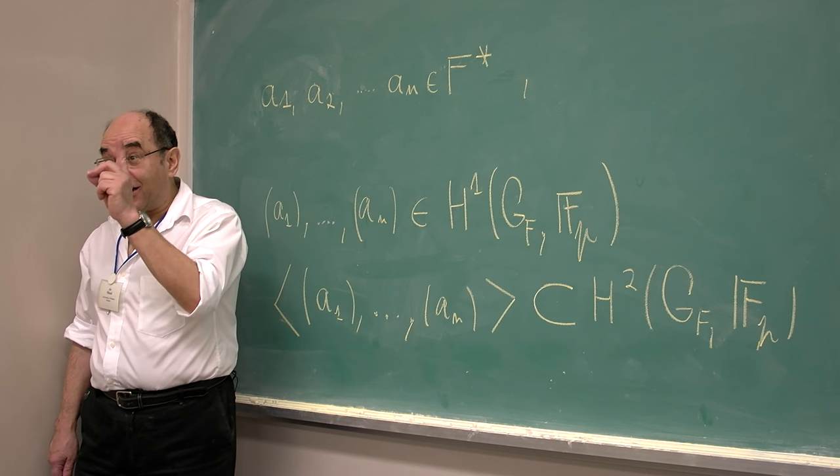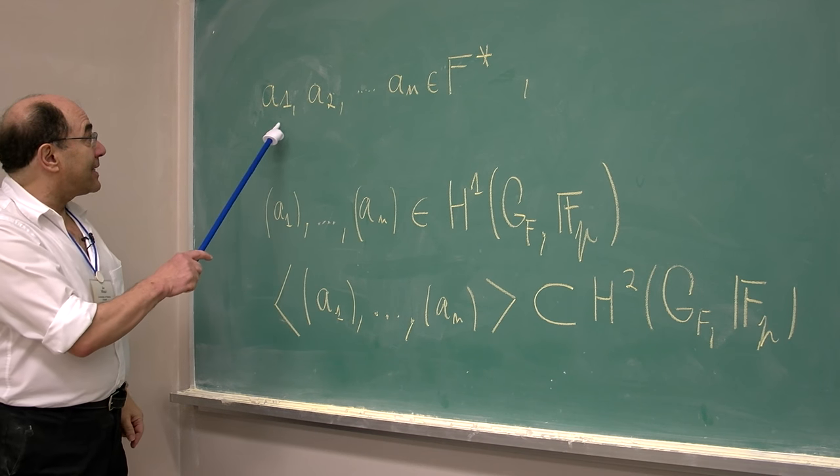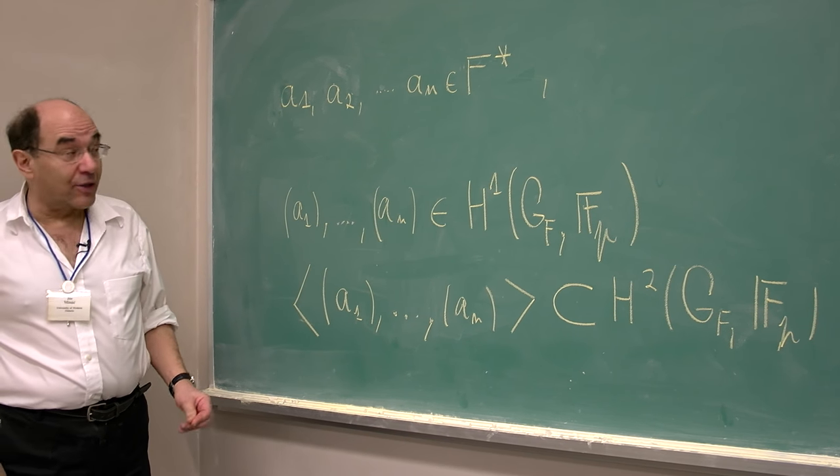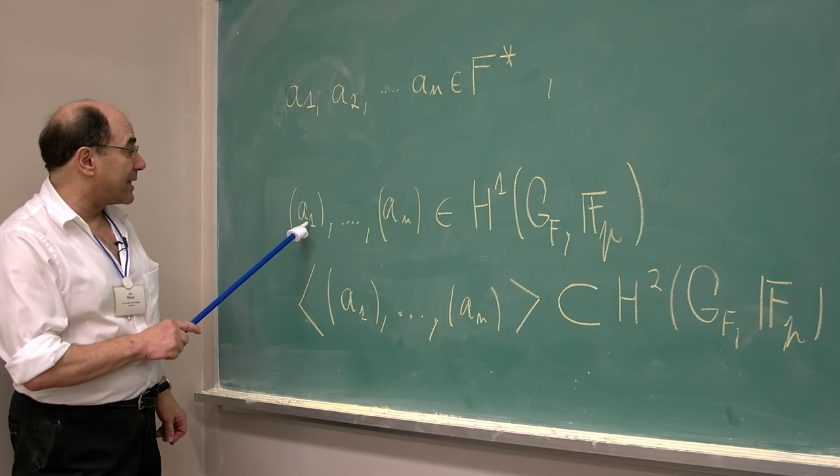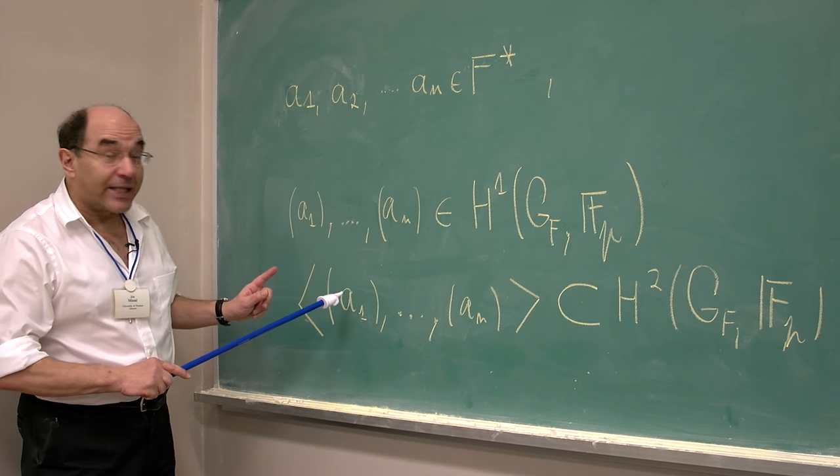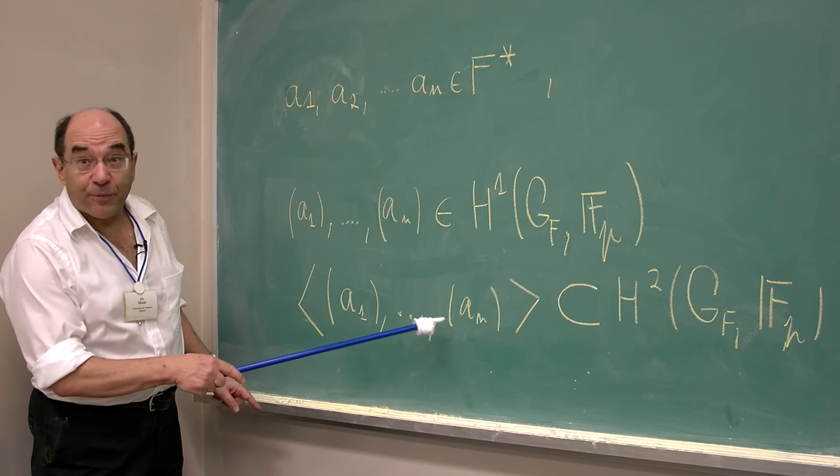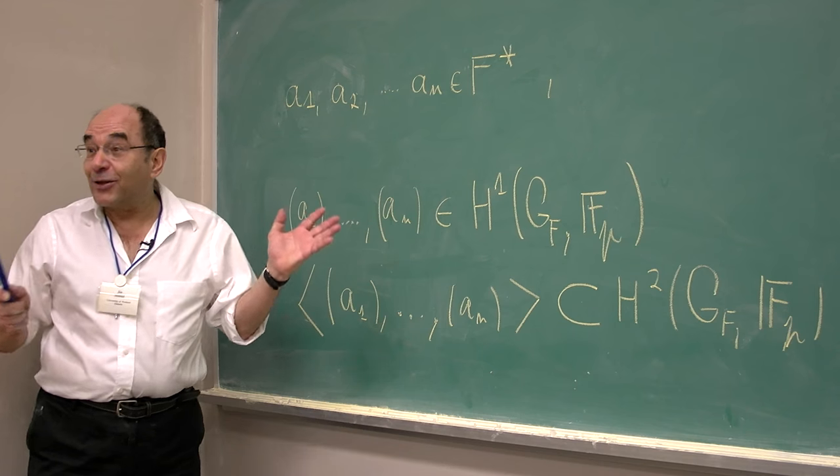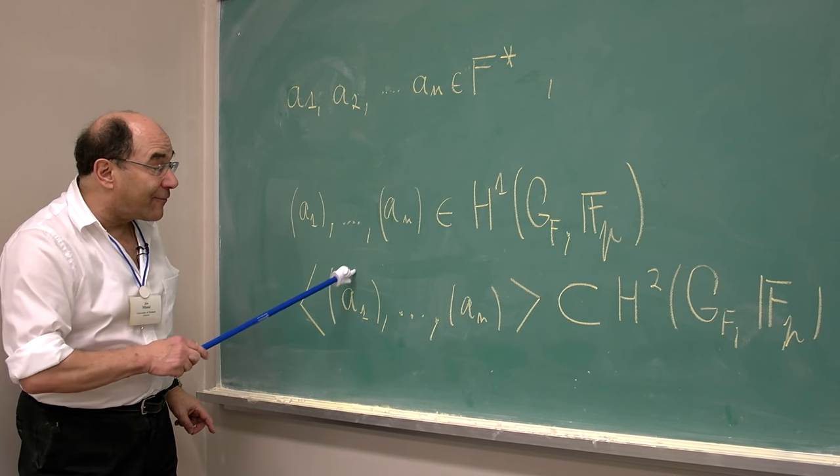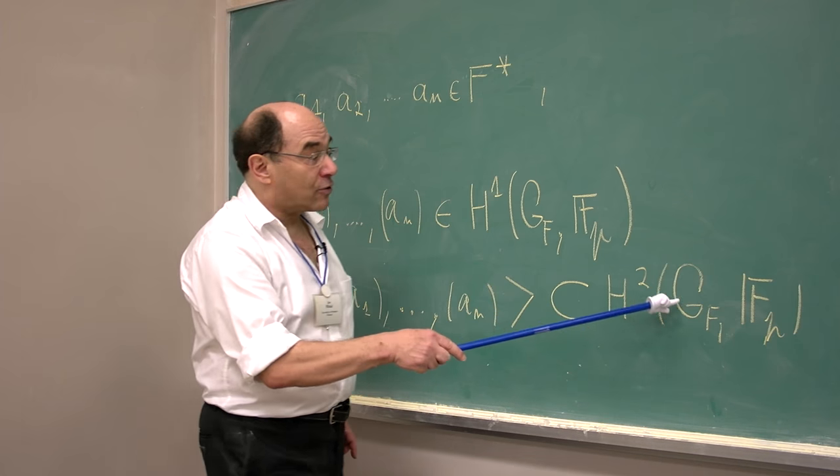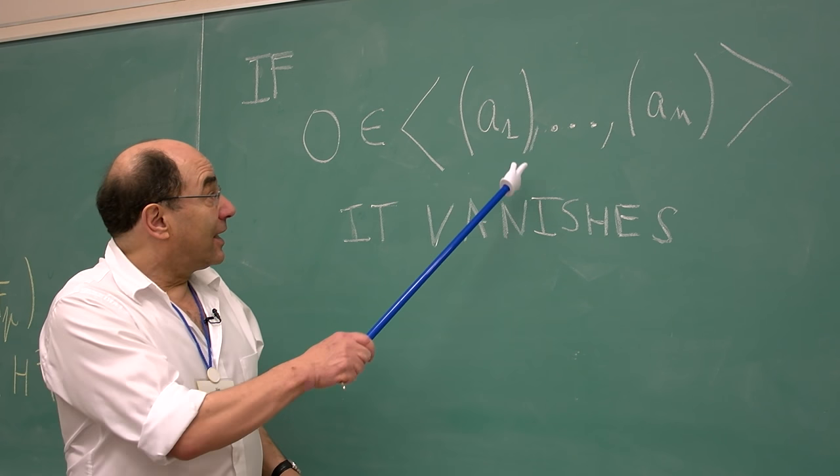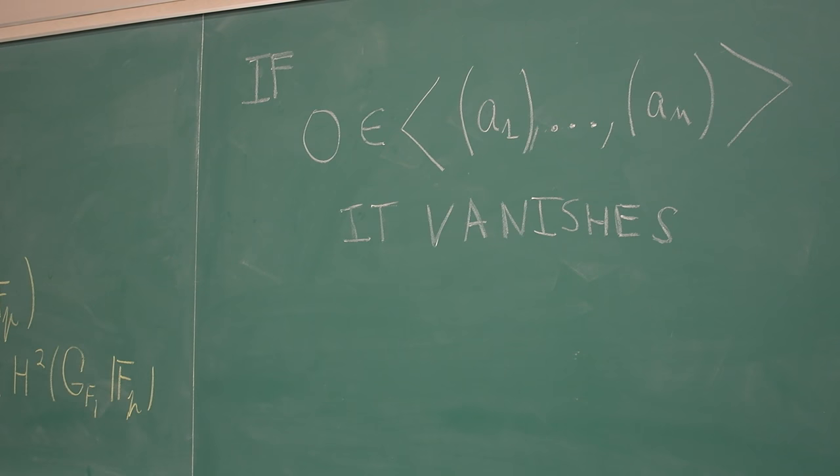Thank you, Yasmin. This is, again, a great question. Consider element a sub 1, a sub 2 up to a sub n from multiplicative group of F. And then, by Kummer theory, you can associate by Kummer map these elements a sub 1 up to a sub n from first cohomology group. And then, what happens is that this n-Massey product, a 1 up to a n, is either defined or is not defined. Suppose it is defined. If it is defined, it is not just a single valued function, but it is a subset of H2, second cohomology group of GF with FP coefficients. In the case when n-Massey vanishing is defined, and it contains zero, then we say that it vanishes.